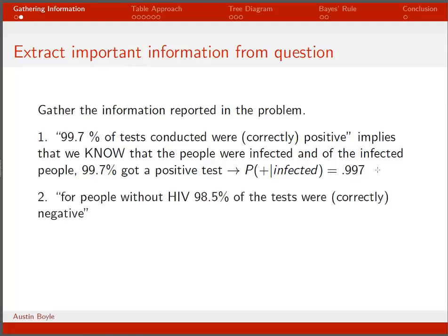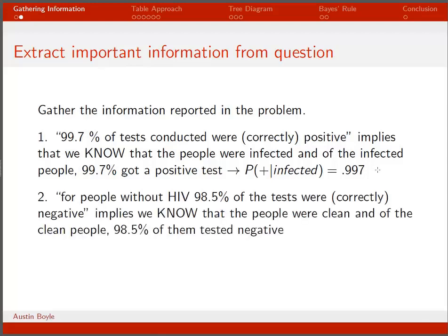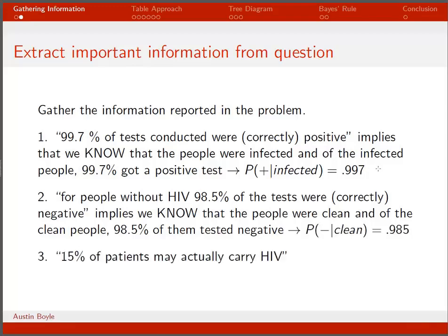The next thing we're told in the problem is that for people without HIV, 98.5% of the tests were correctly negative. This implies that we know the people were clean, and of them 98.5% tested negative. Number three: 15% of patients may actually carry HIV, so the probability that they're infected is 0.15.